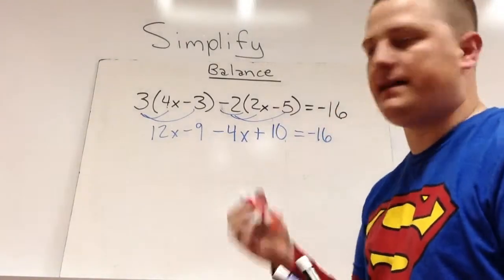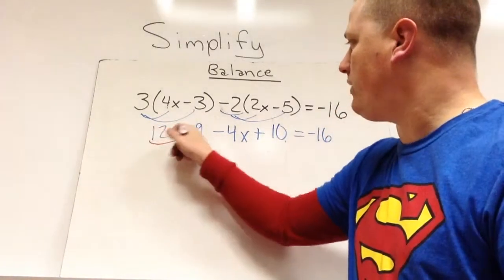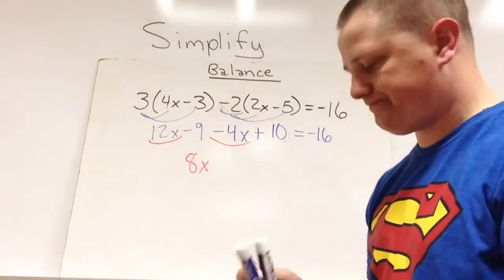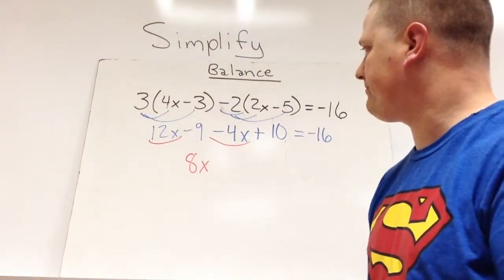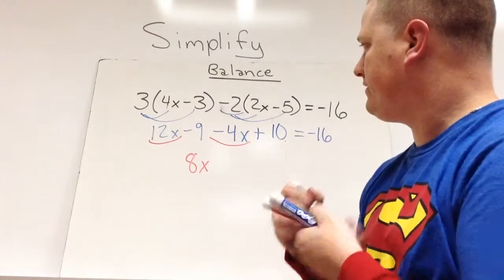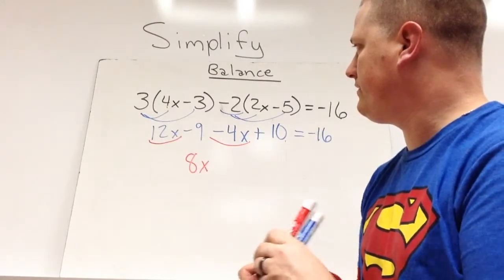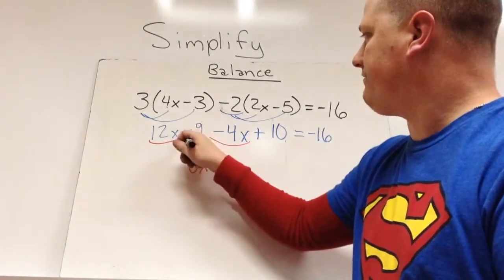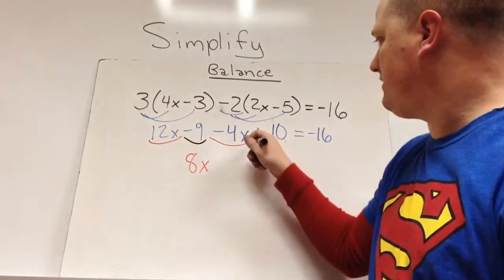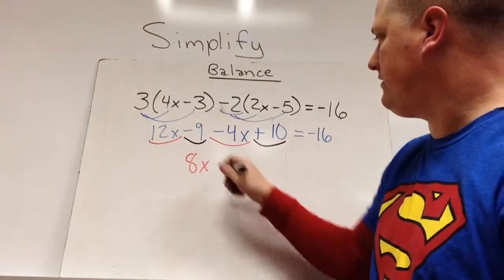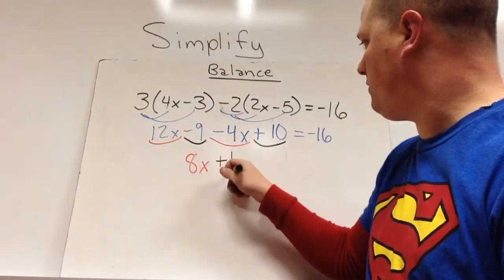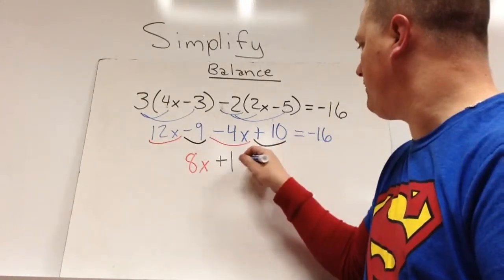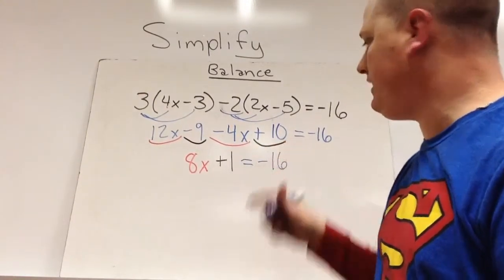Now we want to combine any like terms. So 12x, negative 4x are going to give us 8x. Then we've got negative 9, positive 10 give us positive 1. And this equals negative 16.